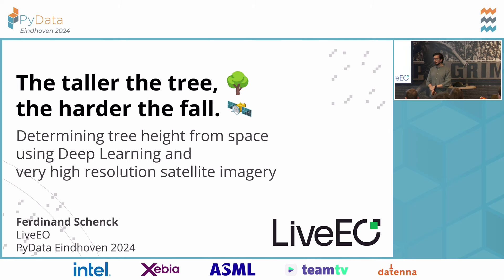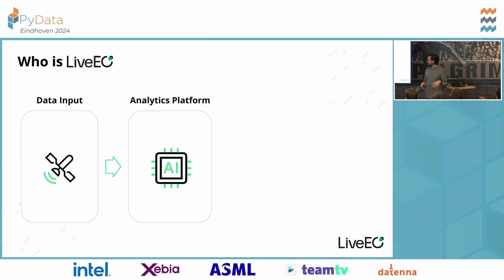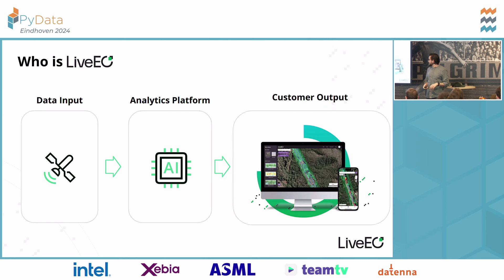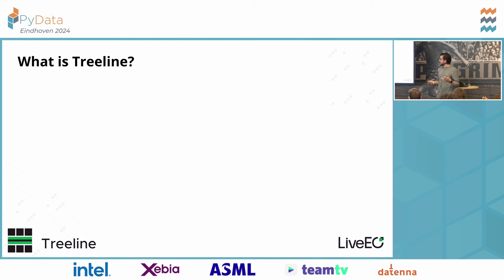We're a company based in Berlin. Liveio is an earth observation company — Live Earth Observation. We take input data, which is mostly satellite data, and process it through our analytics platform, which includes a lot of machine learning. We turn this into actionable insights that our customers can use. We have three products, and I'm going to highlight one of them today, which is called Treeline.